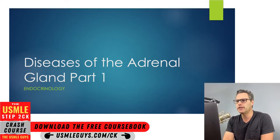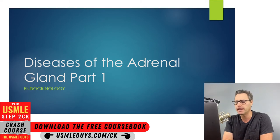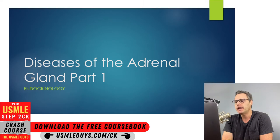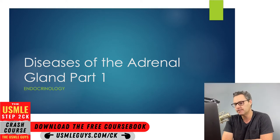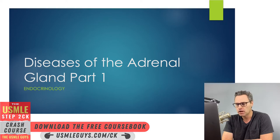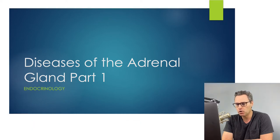Welcome to the next lecture. In this one, we're going to cover diseases of the adrenal gland, and this is a two-part lecture. In part one, we're going to start off by discussing Addison's disease or primary adrenal insufficiency and go over how to distinguish this from secondary adrenal insufficiency. We're also going to discuss adrenal crisis, and then we will go over congenital adrenal hyperplasia at the very end.